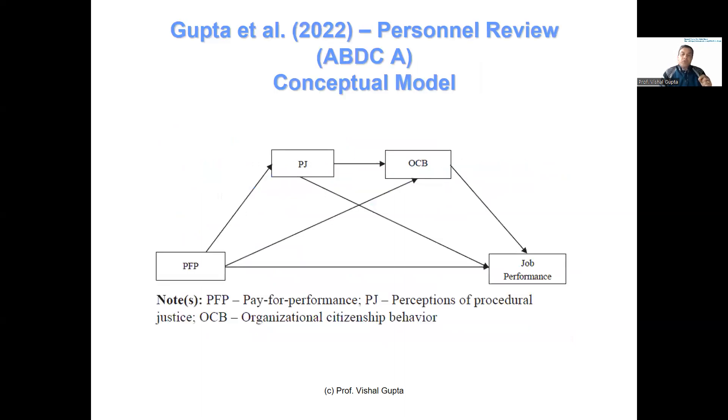I want to show you a conceptual model in a paper that I published in 2022 in Personnel Review. This was a model where I tested sequential mediation between PFP, pay for performance, and job performance. I had four latent constructs: PFP, procedural justice, OCB, and job performance, and three other latent constructs - group-based pay, seniority-based pay, and job security - that I had modeled as control variables.